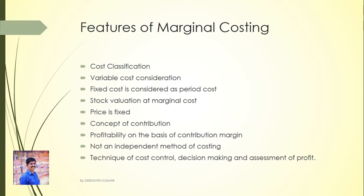The second feature is Variable Cost Consideration. Most weightage is given to variable cost because in marginal costing only variable costs are considered in the determination of the cost of the product.